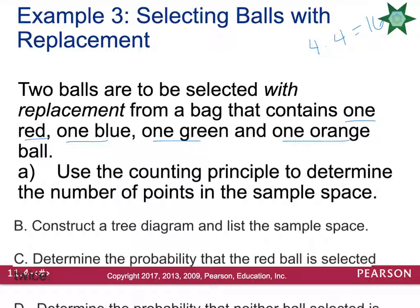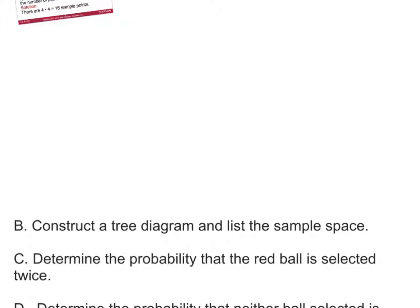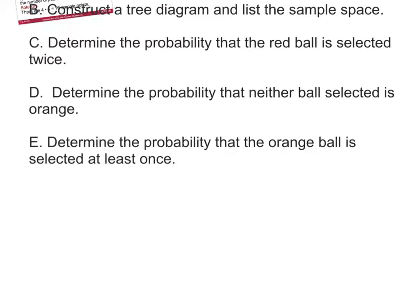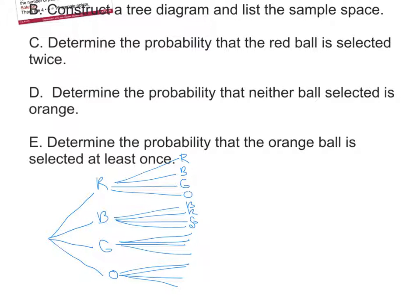Let's construct a tree diagram. On the first draw we have red, blue, green, and orange. On the second draw, for each of those, you could also pull red, blue, green, or orange. If you count, you have 16 branches going to the second set.